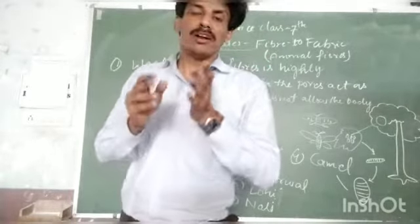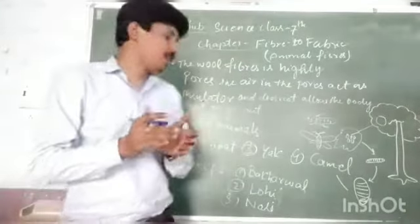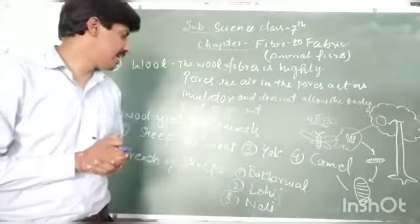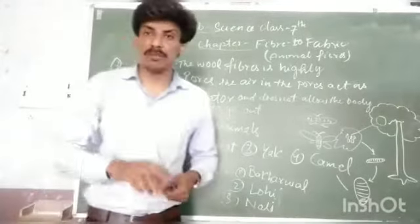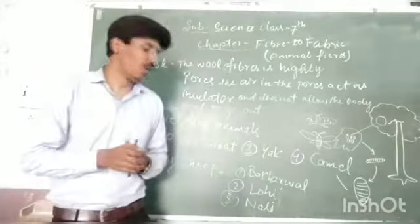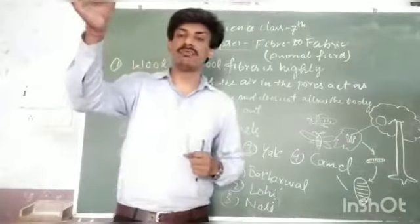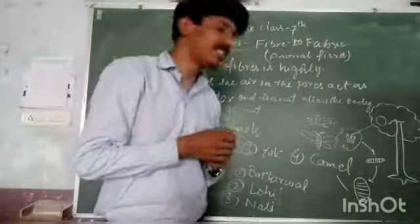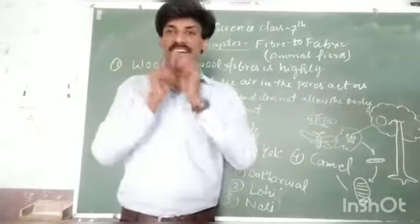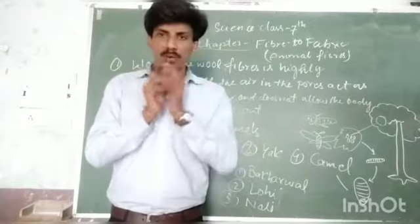Now we discuss the breeds of India. Mainly three types of breeds in India are found. First is Bakarwal breeds found in Uttarakhand. Second is Lohi breeds found in Himachal Pradesh. And third is Nali breed, also found in many places in India.